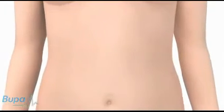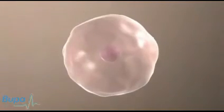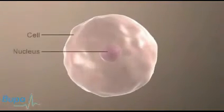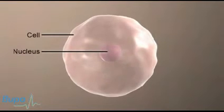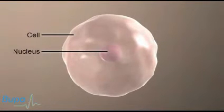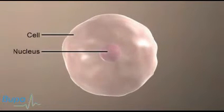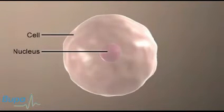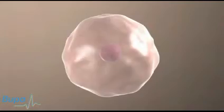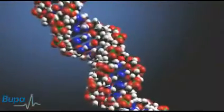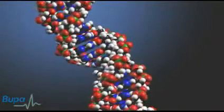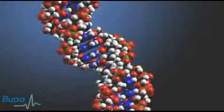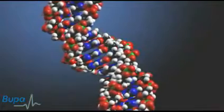Your body is made up of cells. Nearly all the cells in the body have a nucleus, which is the control centre of the cell. The nucleus contains genes, which control everything about the cell, including how the cell grows and when it will die.